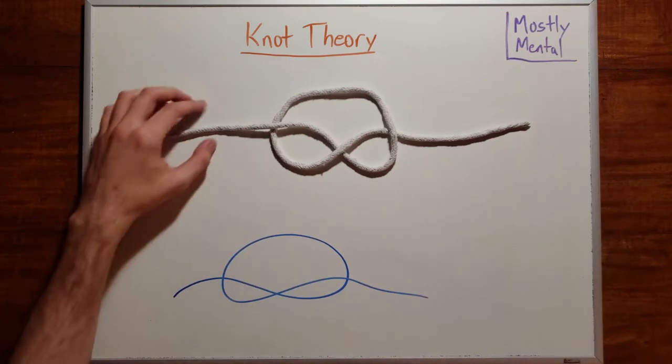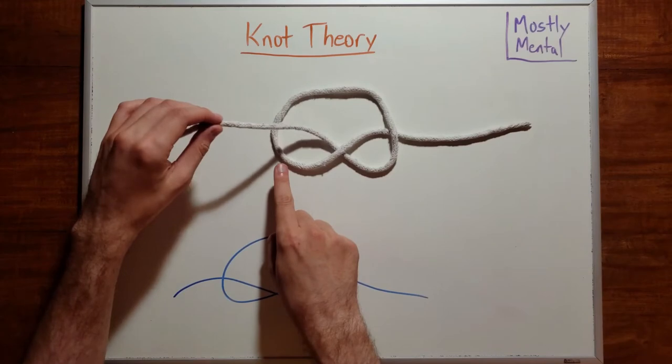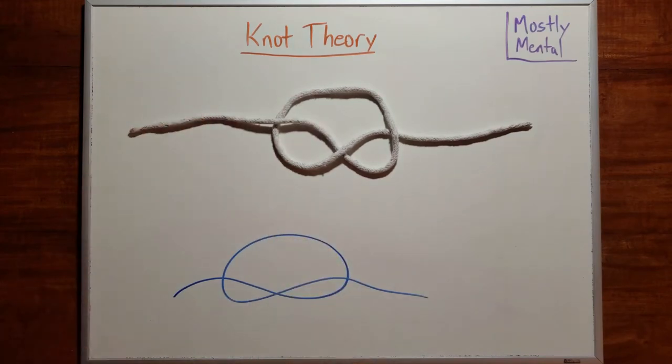In the physical knot, we can figure that out from information like the shadows. But for a knot diagram like this one, we have to use a convention, and the standard is to draw a little gap around each crossing to show which strand is on top.